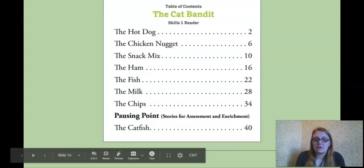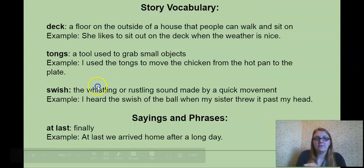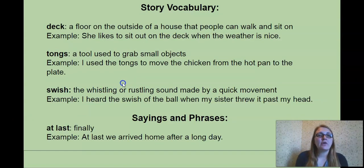Okay, here's our reader. If you have the reader, you are going to turn to page 10. Our story vocabulary for today. Deck. A deck is the floor on the outside of a house that people can walk and sit on. Kind of like a big porch. Example. She likes to sit out on the deck when the weather is nice. So you might go outside your house and there's a deck outside. Tongs. A tool used to grab small objects. I use the tongs to move the chicken from the hot pan to the plate. So they're usually long. They like cling together and you can grab stuff with them and move it.